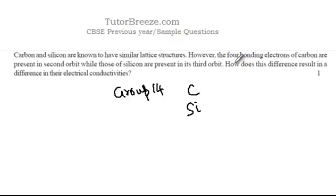The four bonding electrons in carbon are present in the second orbit whereas those in silicon are present in the third orbit. So the ionization energy will be less for silicon. If the ionization energy is less, it's easier to free up electrons from silicon than from carbon. So silicon has a higher conductivity than carbon.